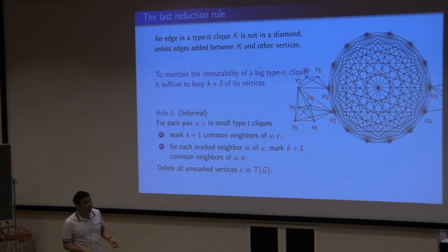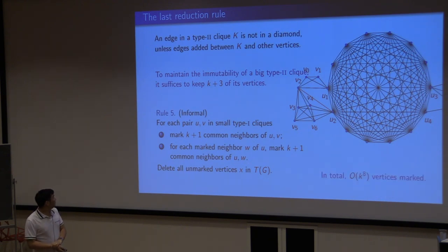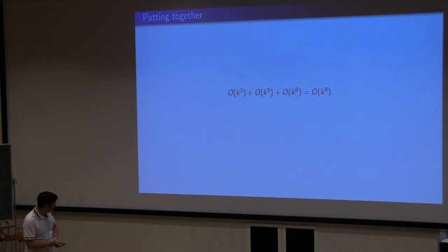For every pair of vertices in small type 1, small bad cliques, we mark k plus 1 common neighbors of them. And then, again, for each of the marked vertex w and u, we mark, again, k plus 1 common neighbors of u and w. Like this, so each pair, we mark some k cubed vertices. If a vertex is not marked and is in TG, we delete. We delete all of them together. Then, we only mark k cubed vertices. So, we got the kernel.